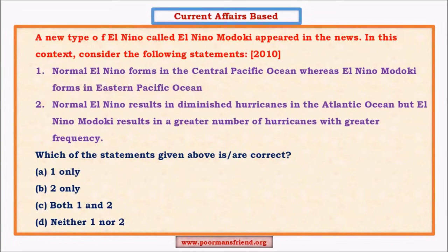Some questions combine current affairs with core geography concepts — for example, El Niño, which constantly influences Indian monsoons. You need a very good understanding of El Niño. Certain important points appear in newspapers, so keep track of newspapers to find current-affairs-based geography questions.